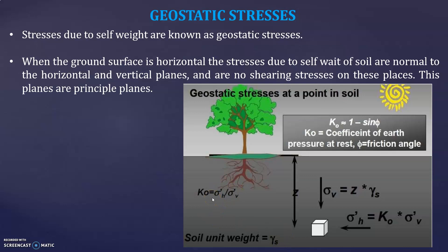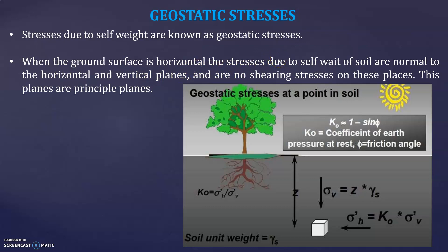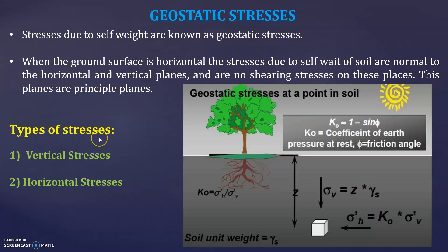The coefficient of earth pressure is the ratio of horizontal stress to vertical stress. So sigma V, the vertical stress, equals Z into gamma, and sigma H, the horizontal stress, equals K0 into sigma-dash V. When the ground surface is horizontal, the stresses due to the self-weight of the soil are normal to the horizontal and vertical planes, and there are no shearing stresses on these planes. Such planes are called principal planes.